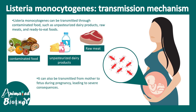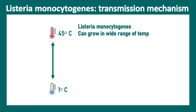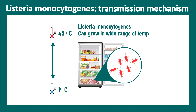Pregnant women are at very high risk of Listeria infection, and it can also be transmitted from mother to fetus during pregnancy, leading to severe consequences. Another important fact is that Listeria can survive in a wide range of temperatures from 1 degree to 45 degrees Celsius, meaning it can even survive in the refrigerator at around 4 degrees centigrade.